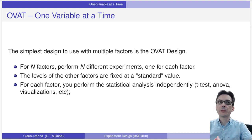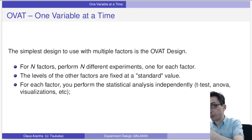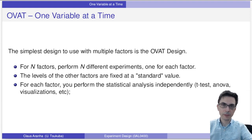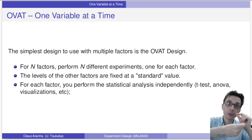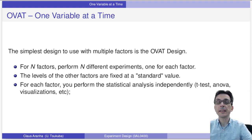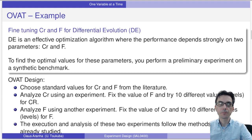The simplest design that we use to treat multiple factors is the OVAT design. OVAT means one variable at a time. In OVAT design, you have N factors, and for each of these factors you perform one experiment. The levels of the factor you are focusing on change, but the levels of the other factors are fixed at a standard value from the literature or a default value. For each factor, you perform the statistical analysis independently using the t-test, ANOVA, visualizations, etc.